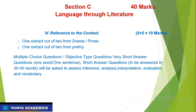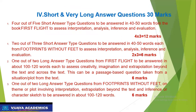In the Reference to Context questions, the kinds of questions will be: Multiple Choice Questions, objective type questions, very short answer questions — one word, one sentence — and short answer questions to be answered in 30 to 40 words, asked to assess inference, analysis, interpretation, evaluation, and vocabulary. So it is very easy to score ten marks.